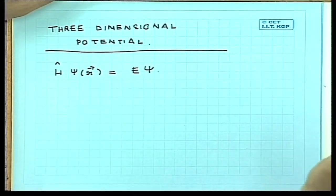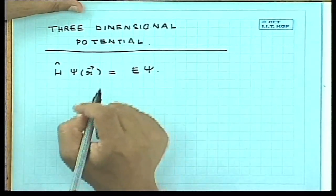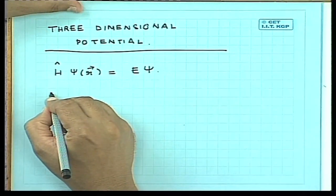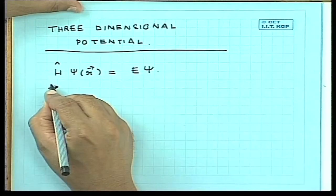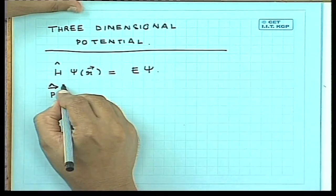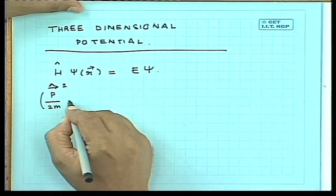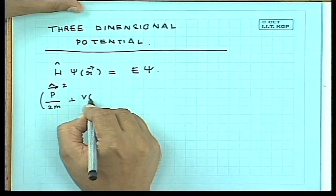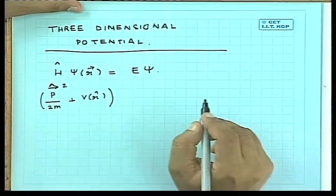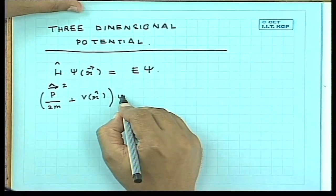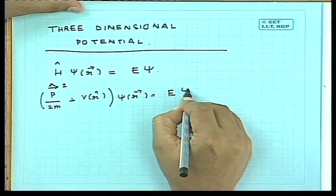For a particle which is free to move in three dimensions, the Hamiltonian H is the sum of the momentum squared. So this is P — it is now a vector quantity — P squared by 2M plus V(R). This is the Hamiltonian operator acting on psi, which is a function of R, equal to E psi.